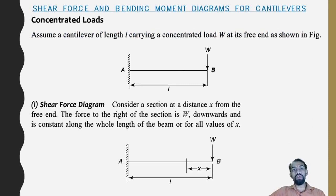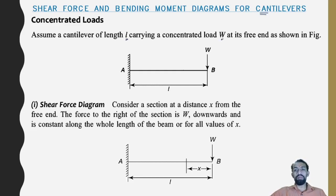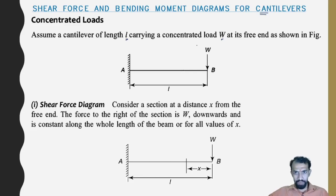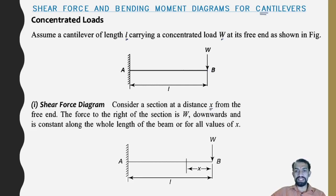Now, shear force and bending moment diagrams for cantilevers. A cantilever is a member fixed at one end and free at the other. Assume a cantilever of length L carrying a concentrated load W at its free end. Point A is the fixed end, point B is the free end, and W acts as a point load.